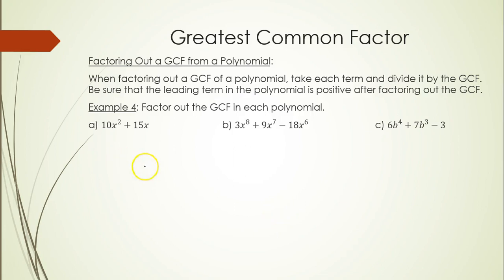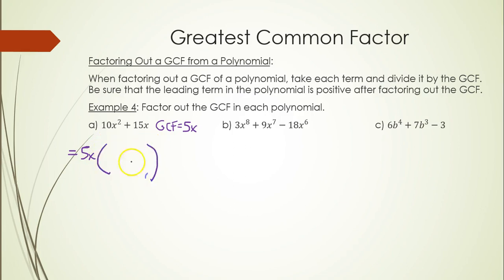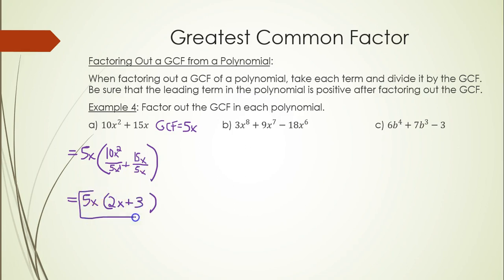Now we'll factor the GCF out of a polynomial by dividing each term by the GCF. For part a, 10x² + 15x: 10 and 15 are both divisible by 5, and the lowest power of x is 1, so the GCF is 5x. Write 5x out front of parentheses, then divide every term by 5x: 10x² ÷ 5x = 2x and 15x ÷ 5x = 3. The factored form is 5x(2x + 3).